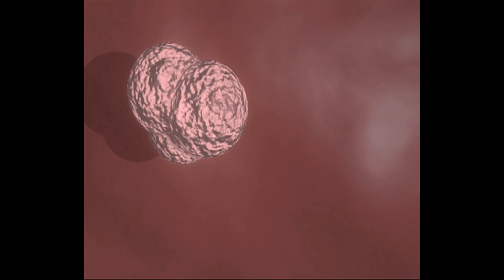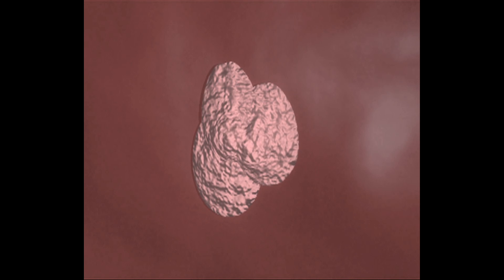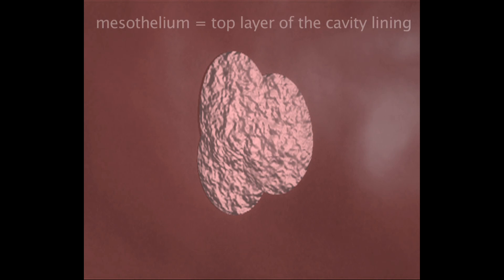One of the clusters attaches itself to the lining of the cavity, where it spreads out and launches an invasion into the top layer of the lining, which is called the mesothelium.